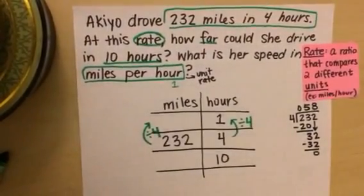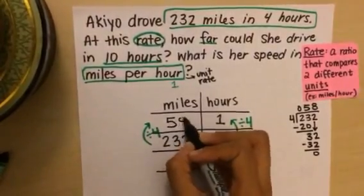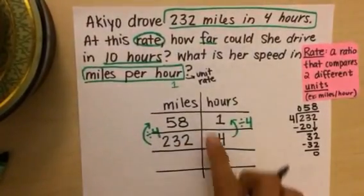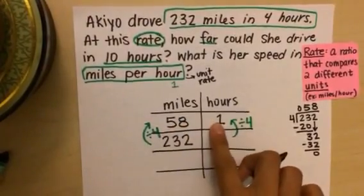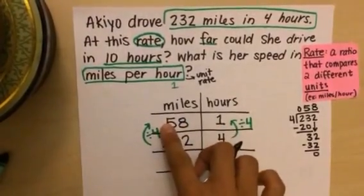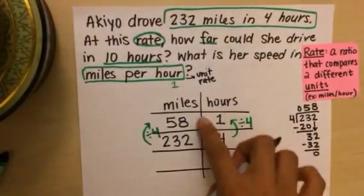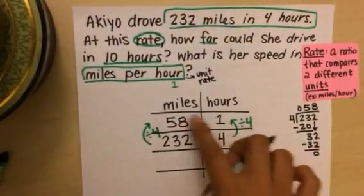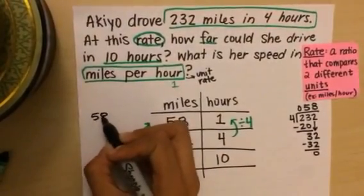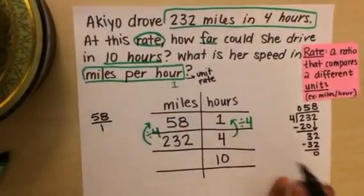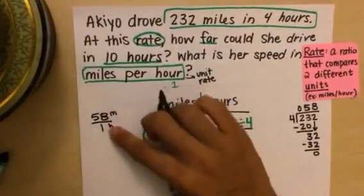And I have no remainders, so I'm good to go. This means that Akio drives 58 miles in one hour. And remember that this one is our unit rate because it's a denominator of one. So if I were to write this as a rate, I could write it as 58 to one. 58 miles to one hour. So that's our unit rate.